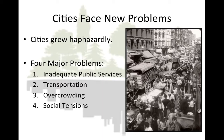And finally, social tensions: in cities, rich people lived next door to the poor. Seeing the luxuries of the wealthy distressed poor people and increased social tensions and crime.